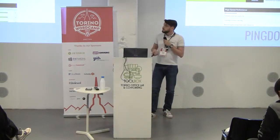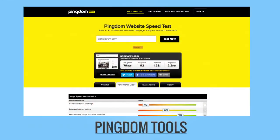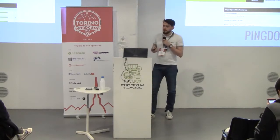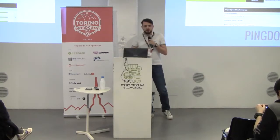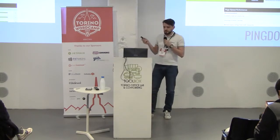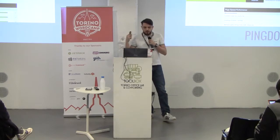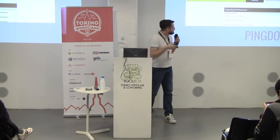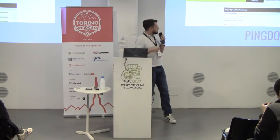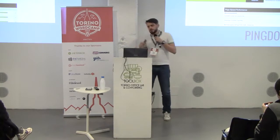Another very popular tool is Pingdom's free tool. I use it mostly because it allows you, by clicking on the settings, to choose from where you can make the checks. So basically, you can see how the page loads from the United States, from Europe, from Asia — they have five different locations — which is really useful to see how your scores differ in different places. Again, they show you a number of checks and your results with another grade, like 79 out of 100.